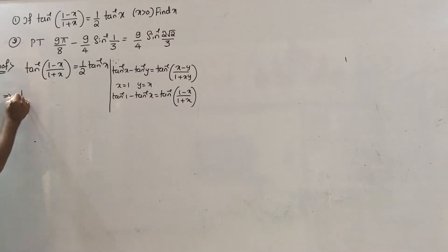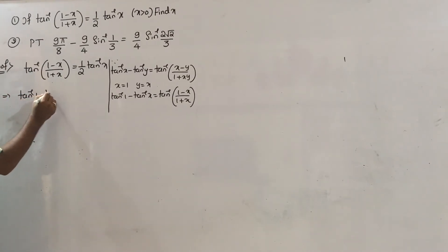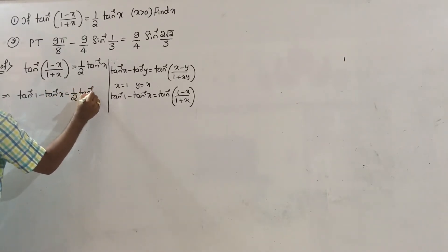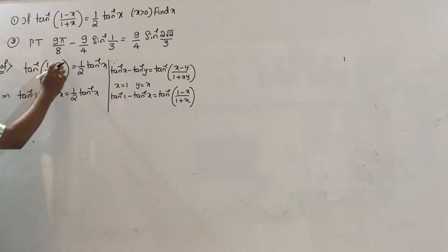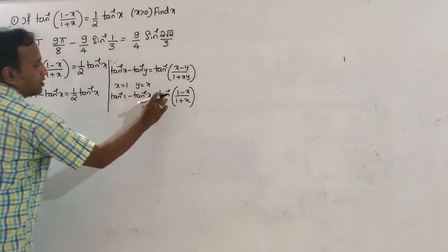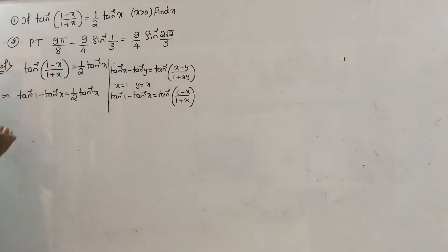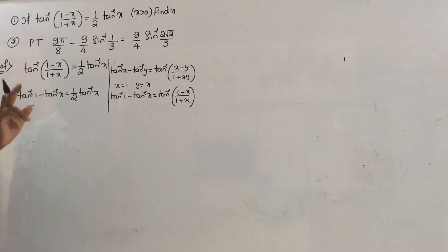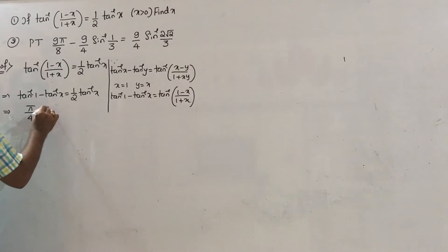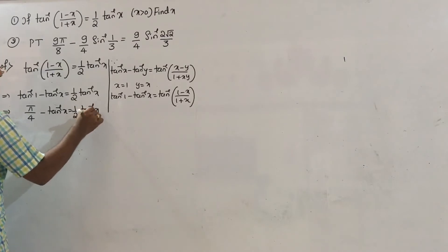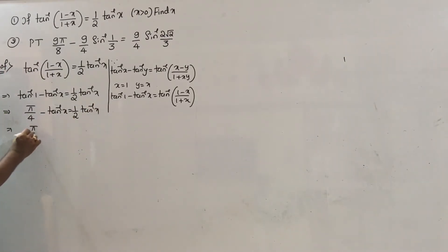So tan inverse 1 minus tan inverse x equals one half tan inverse x. Tan inverse of (1 minus x) divided by (1 plus x) means tan inverse 1 minus tan inverse x. Tan inverse 1 equals pi by 4, so pi by 4 minus tan inverse x equals one half tan inverse x.